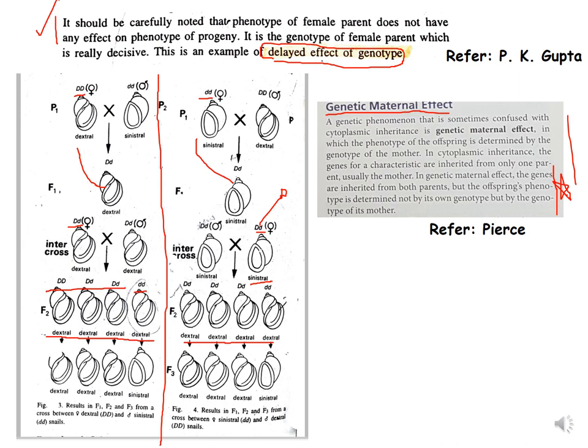How do we explain this? It is a little tricky. Until F1, the progeny resembles the female parent. From F2 onwards, it is actually the genotype of the female parent that matters, not its phenotype. In both crosses, the female parent is heterozygous (D/d), so all F2 progeny are dextral in both crosses because they are resembling their mother's genotype. In F3 the ratio is 3 dextral to 1 sinistral.